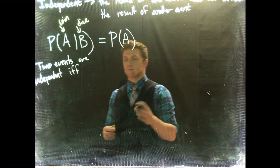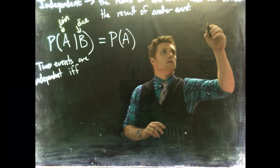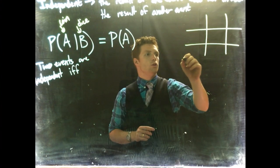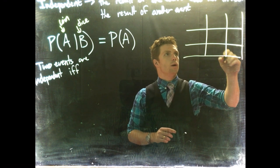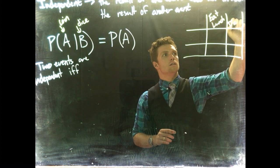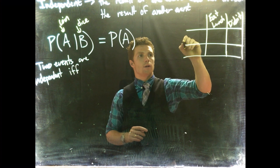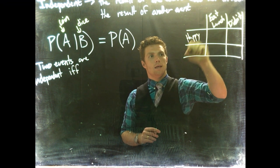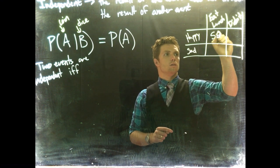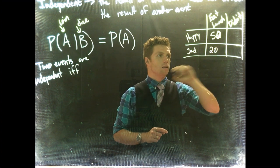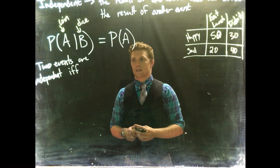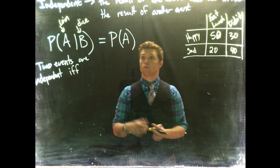Contingency tables are a little tricky. So if we have a simple contingency table, we'll use our happy and eating lunch example. We have 'eat lunch' and 'didn't,' and over here we have 'happy' and 'sad.' We had something like 50, 50, 20, and I think 40 and 30 — something like that. So we can try to determine if two events are independent.